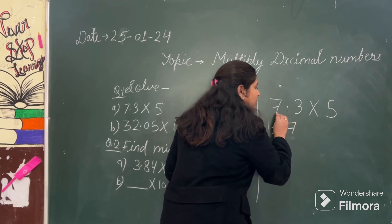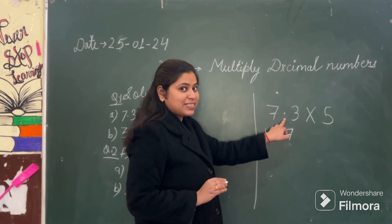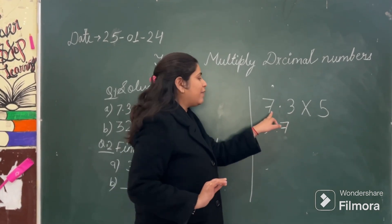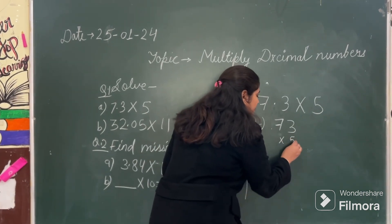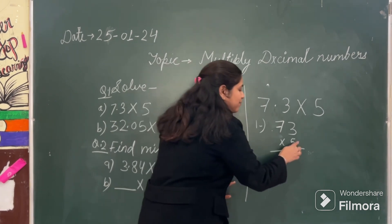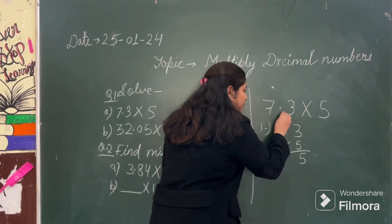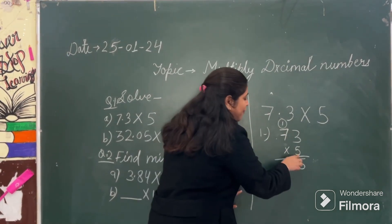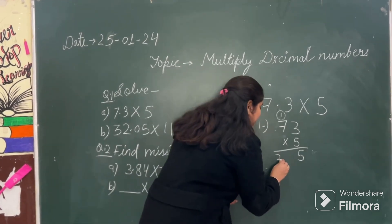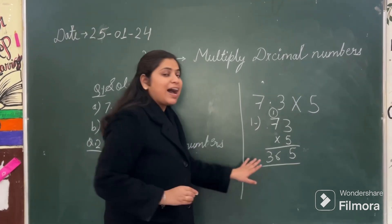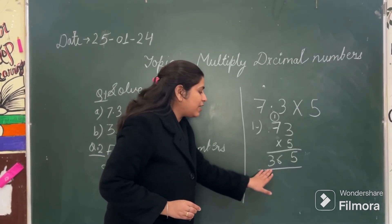So let's do it. If you ignore this decimal point for now, then what it is? 73. So I am writing here 73 multiply by 5. Correct? 5 times 3 is 15. 1 carry. 5 times 7 is 35. Then 35 plus 1, 36. So here the answer you got that is 365.